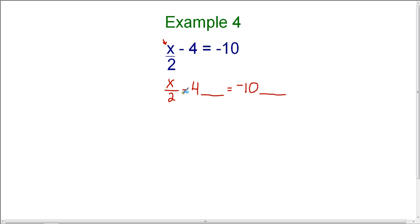So now, we have x divided by 2 minus 4. What can I do to get rid of minus 4? Remember, we want to use inverse operations or opposite operations. The opposite of minus 4 is plus 4, so I'm going to add 4 to both sides of the equation.